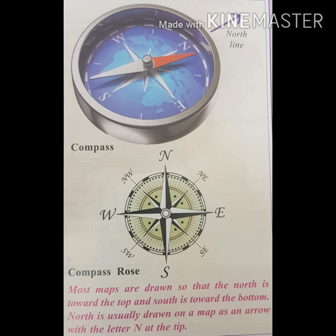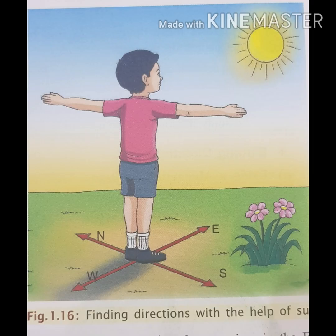The second way to know the direction is with the help of the rising sun — we can find direction with the help of the sun. The third way is with the help of the Pole Star. The Pole Star always points towards the north and is always visible in the sky. When we know the north direction, it makes it easy to know the other three cardinal directions.